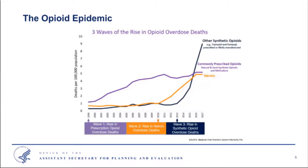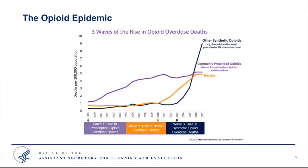The opioid crisis can be outlined in three distinct waves. The first wave began with increased prescribing of opioids in the 1990s, with overdose deaths involving prescription opioids — including natural and semisynthetic opioids and methadone — increasing since at least 1999. The second wave began in 2010 with the rapid increase in overdose deaths involving heroin. The third wave began in 2013, with significant increases in overdose deaths involving synthetic opioids, particularly illicitly manufactured fentanyl, also known as IMF.